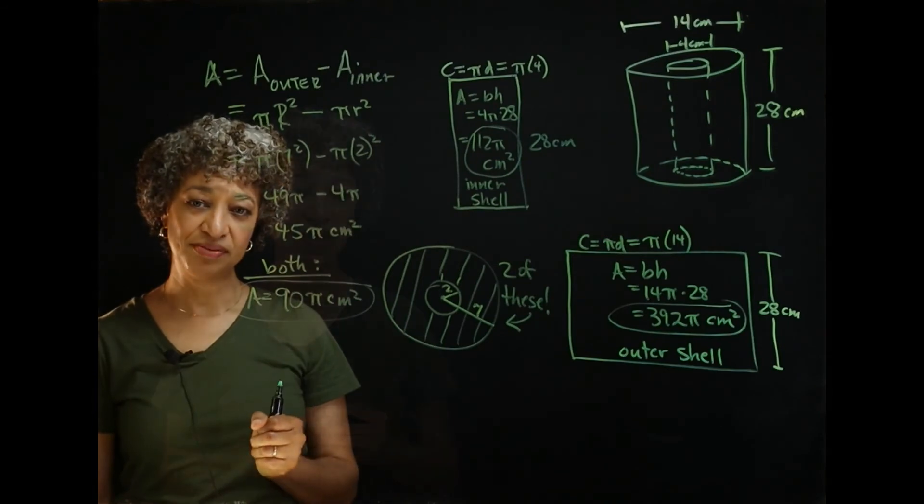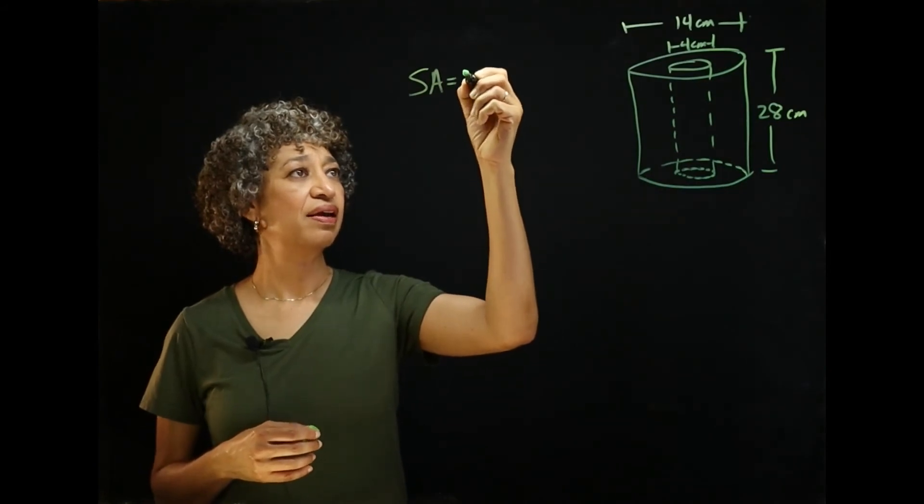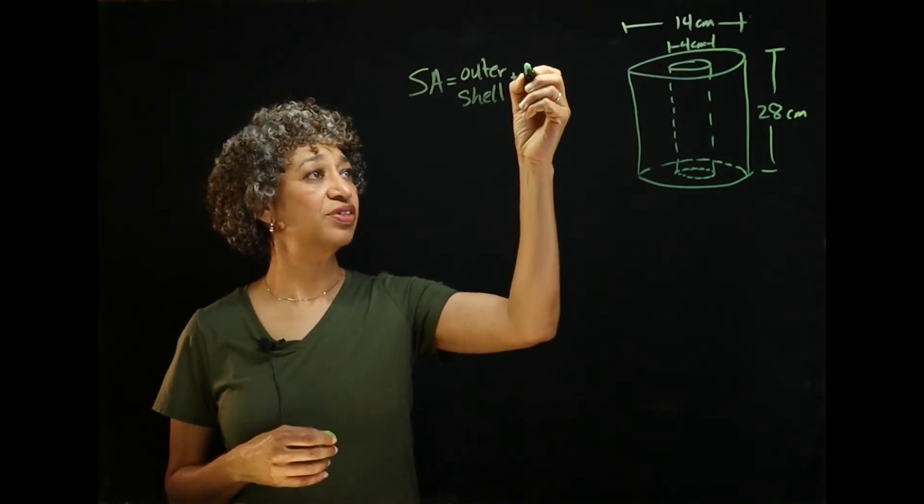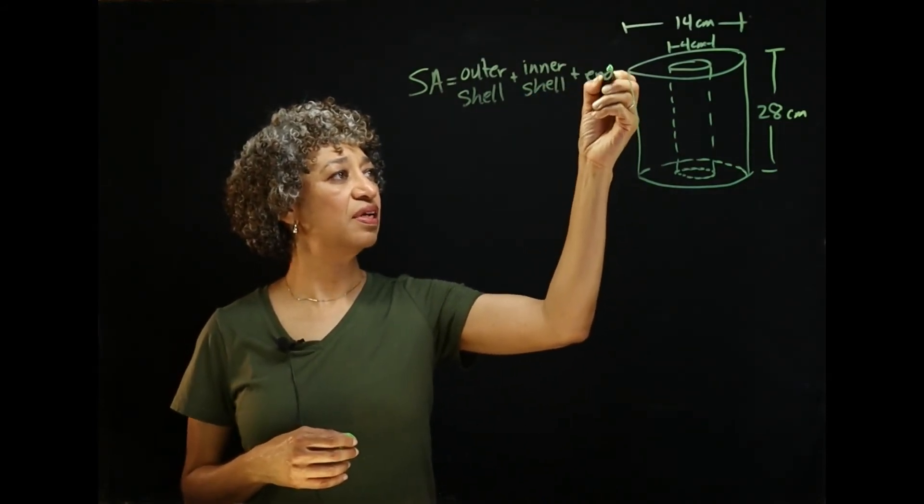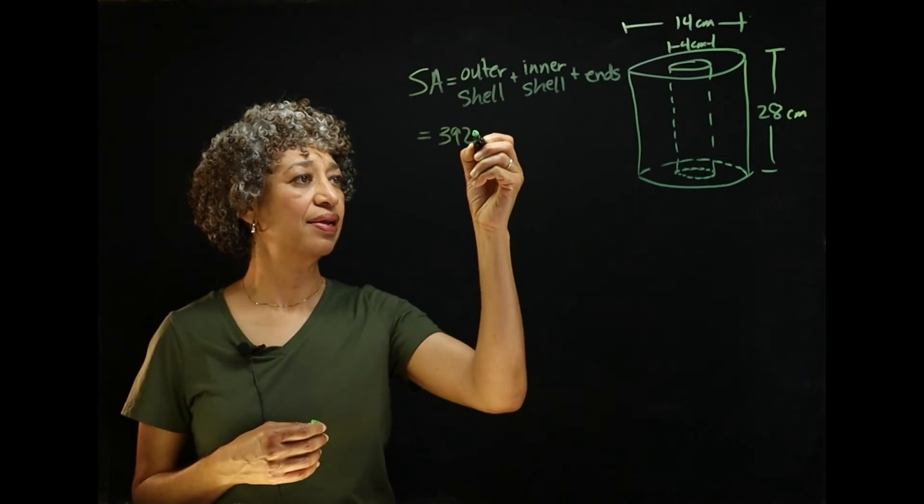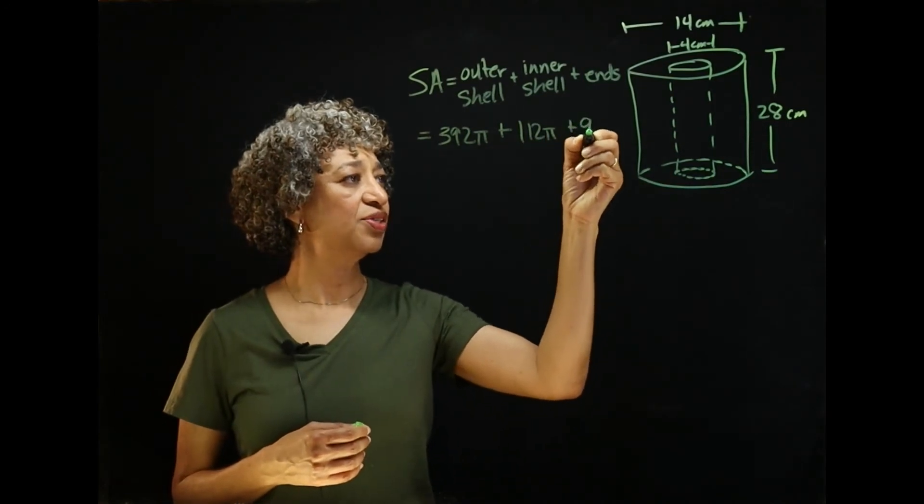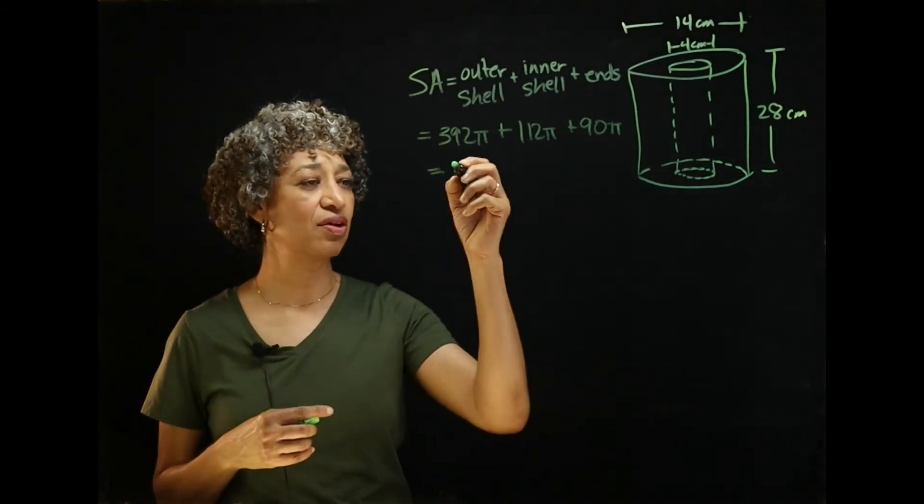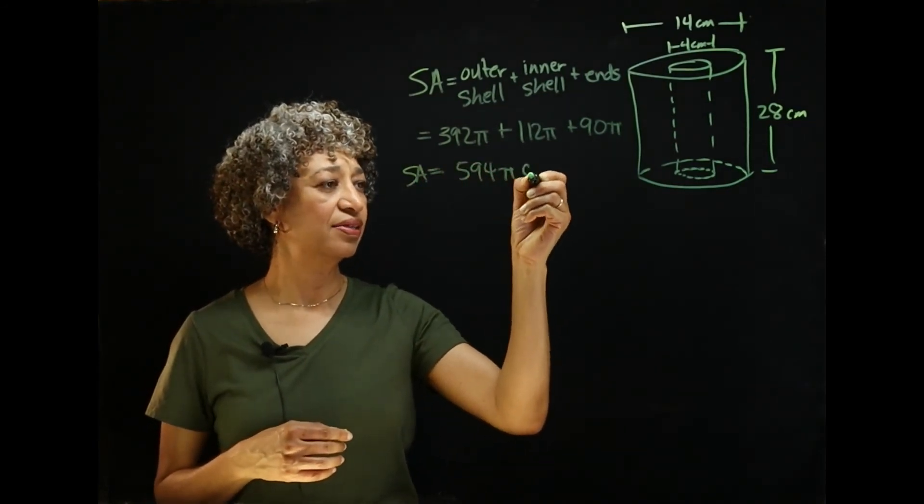So, we're going to sum them up. So, the surface area, we're going to calculate by adding the area of the outer shell, plus the area of the inner shell, plus the area of the two ends. Now, remember, for the outer shell, we got 392 pi square centimeters. The inner shell was 112 pi, and the ends totaled 90 pi square centimeters. Our total, then, for our roll of paper towels, the surface area is 594 pi square centimeters. There you have it.